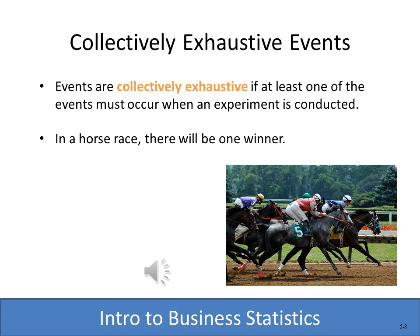We've had mutually exclusive and independent, and now we have another term: collectively exhaustive. Collectively exhaustive means that at least one of the events must occur when an experiment is conducted. If you have a horse race, there's going to be a winner. If you flip a coin, it's going to be either heads or tails — it is collectively exhaustive because either one or the other must occur.